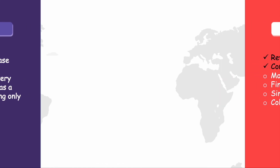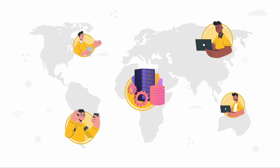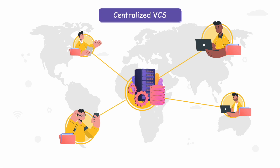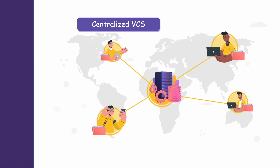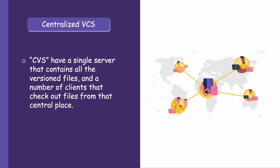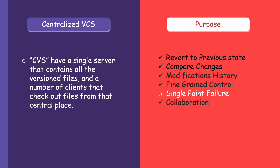The next major challenge that people face is the need to collaborate with other developers who are using different systems. To deal with this problem, centralized version control systems, CVCS, were developed. In CVCS, all the version files are stored on a single server. In addition to the ability to track modification history and collaborate across different systems, CVCS also provide administrators with precise control over the project.